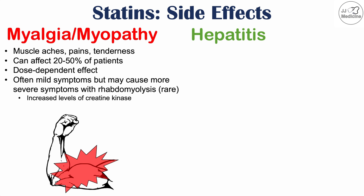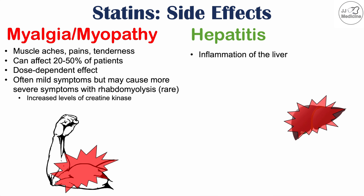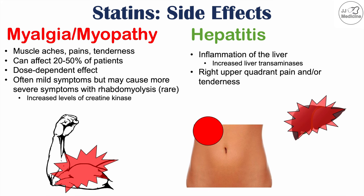Another significant side effect of statin use is hepatitis, which means inflammation of the liver. This is visible in blood work as increased liver transaminases — as the liver becomes damaged, it releases enzymes into the blood. Patients affected by statin-induced hepatitis experience right upper quadrant pain or tenderness, which is the area where the liver is located.